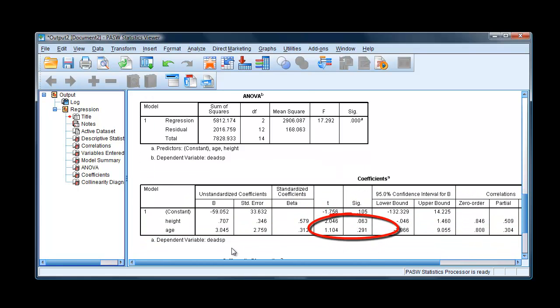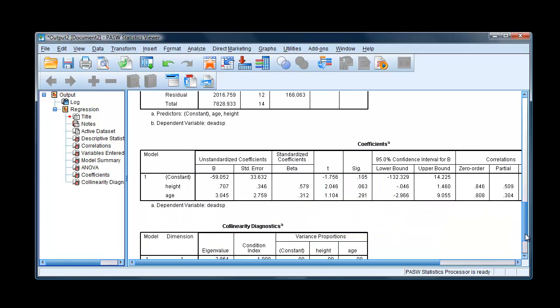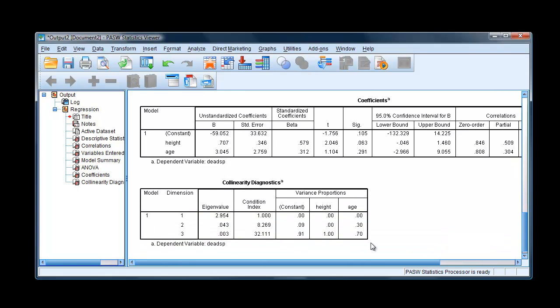And there's the p-values. And neither of them are significant if we take the critical value to be 0.05. So what is going on? Well, it's to do with this problem of collinearity. And that's why I asked for the collinearity diagnostics here.